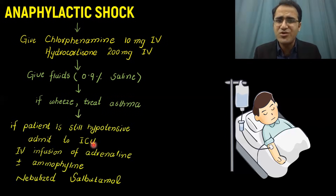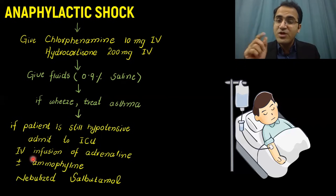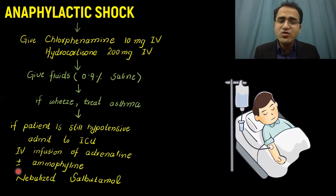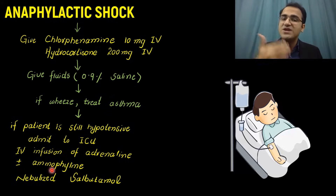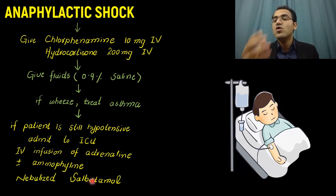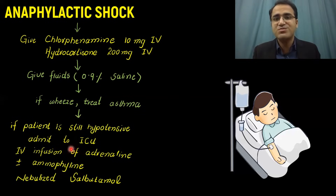If the patient is still hypotensive after giving adrenaline, hydrocortisone, and fluids, you must admit the patient to the ICU. Start an IV infusion of adrenaline, which will act on the vessels, cause vasoconstriction, and control the blood pressure. Also consider giving aminophylline, which causes bronchodilation and supports the respiratory system, and give nebulized salbutamol for bronchodilation.